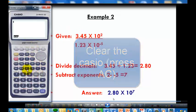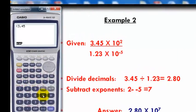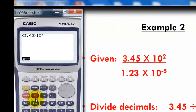So 3.45 open parenthesis 3.45 times 10 raise to 2 close paren divided by open paren 1.23 times 10 raise to negative 5 close paren.